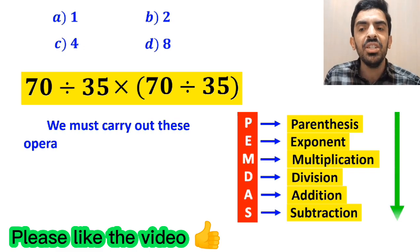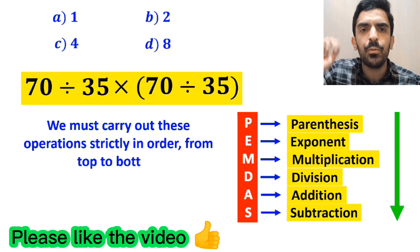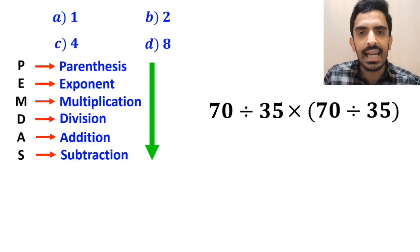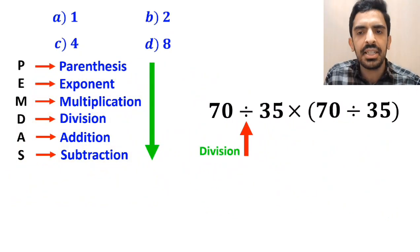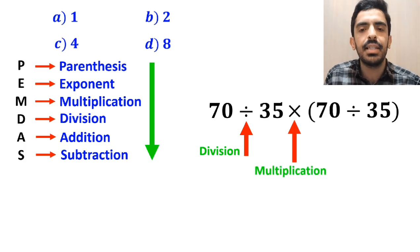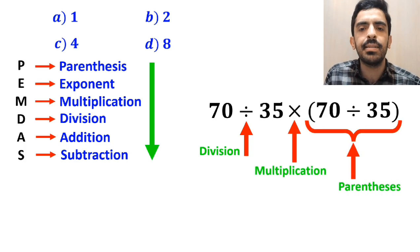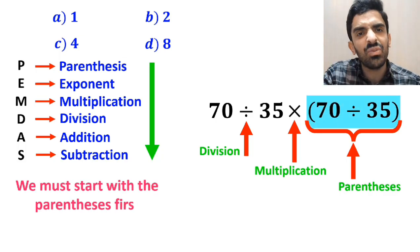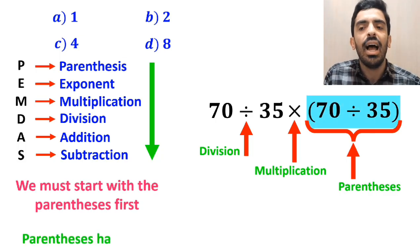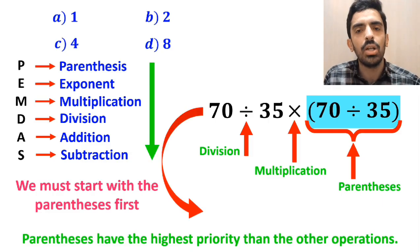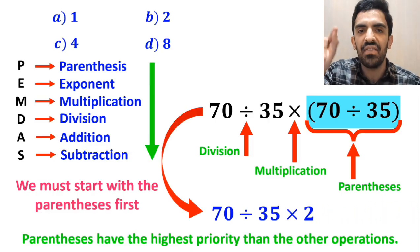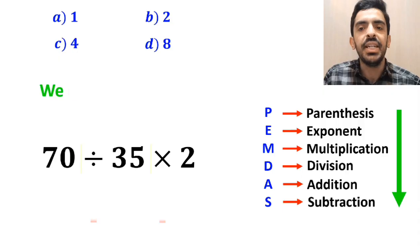We must carry out these operations strictly in order from top to bottom. As you can see in the image, in this expression we first have a division sign, then a multiplication sign, and finally parentheses. According to the PEMDAS rule, we must start with the parentheses first because parentheses have the highest priority. So we rewrite this expression as 70 divided by 35 multiplied by 2.